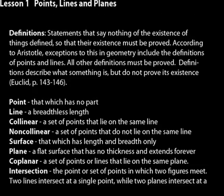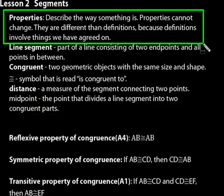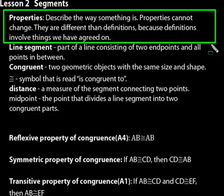You might recall in lesson one we defined a line as a breathless length. So here we'll be discussing line segments, but first let's talk about what properties are because we'll be talking about those as well. Properties describe the way something is. They cannot change. And they're different than definitions because definitions involve things we have agreed on.